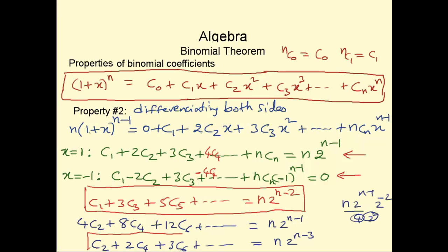So these are all equations obtained from property number 2, which is: differentiate both sides and then substitute values for x. We can also substitute x = 2 or x = 3 or whatever. Depending upon what you need to prove, you can differentiate both sides, substitute those values, and then add or subtract the equations to get the final result.